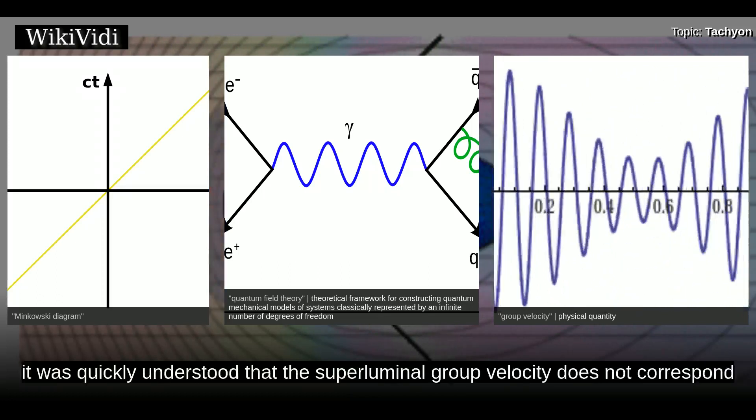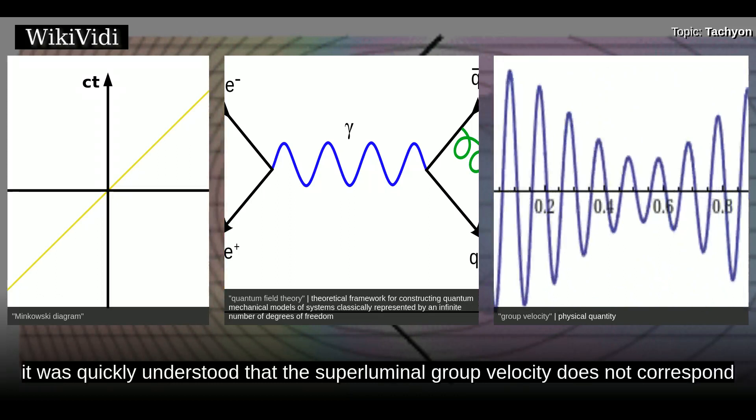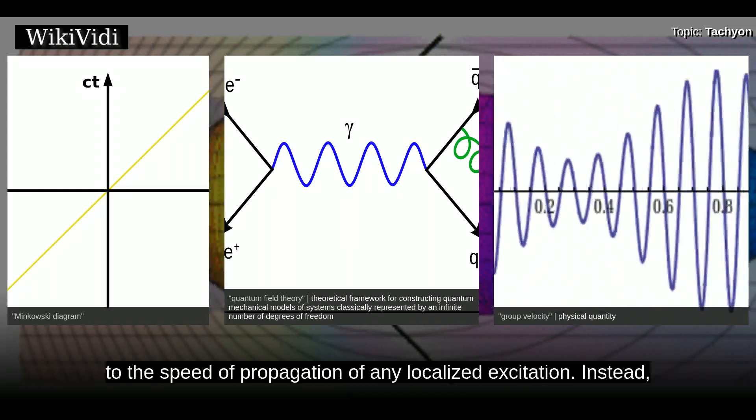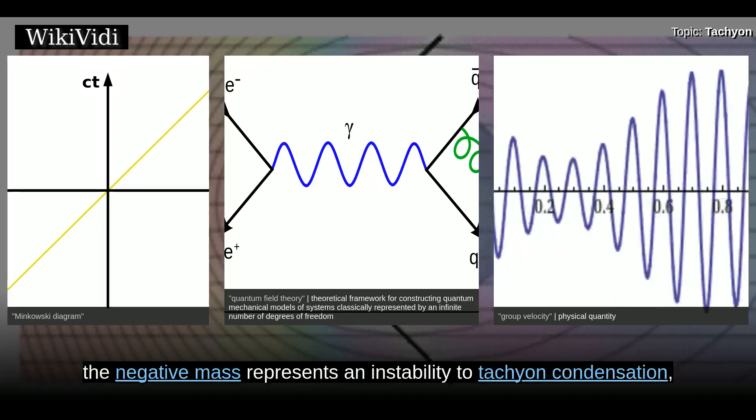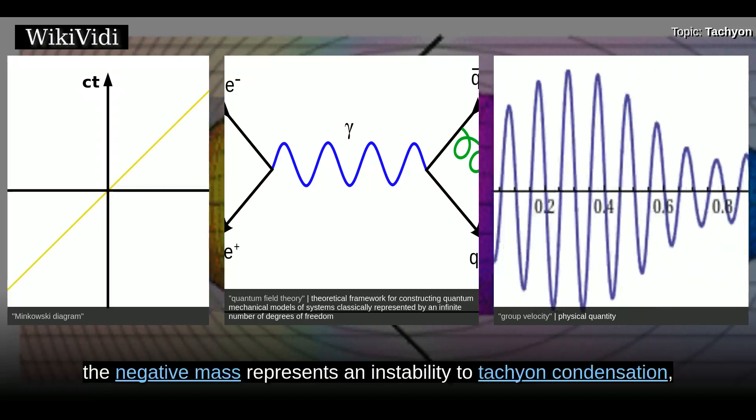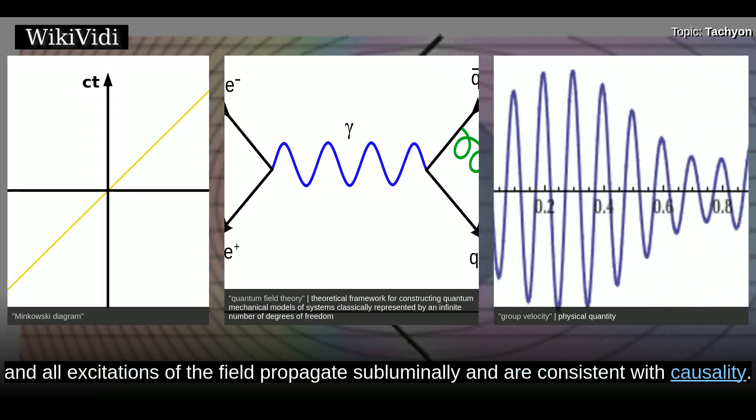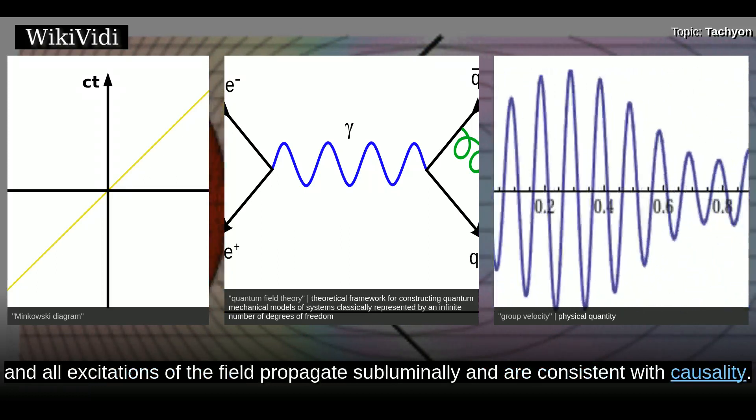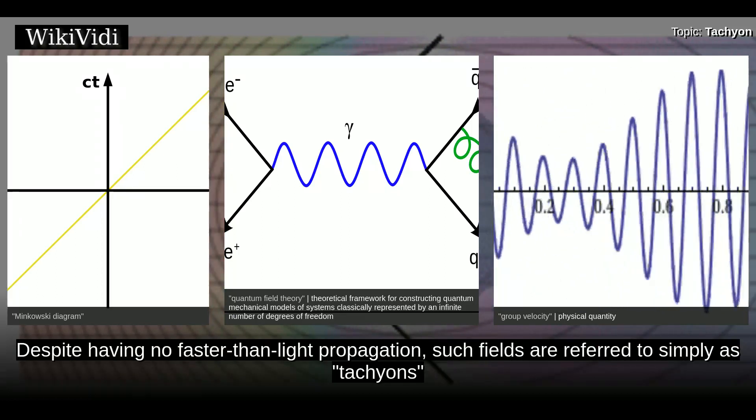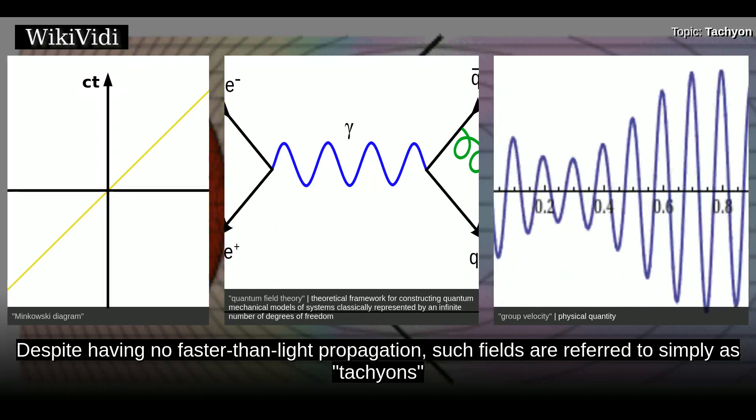However, it was quickly understood that the superluminal group velocity does not correspond to the speed of propagation of any localized excitation. Instead, the negative mass represents an instability to tachyon condensation, and all excitations of the field propagate subluminally and are consistent with causality. Despite having no faster-than-light propagation, such fields are referred to simply as tachyons.